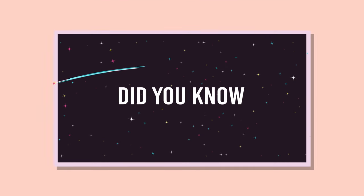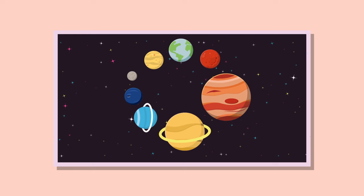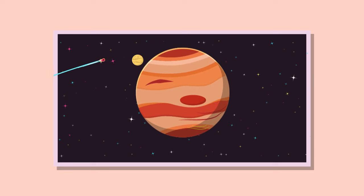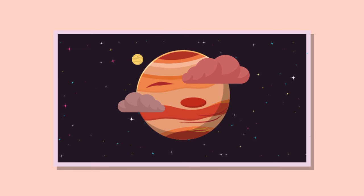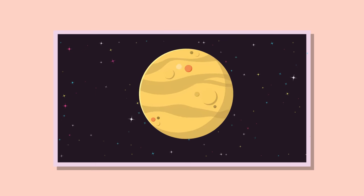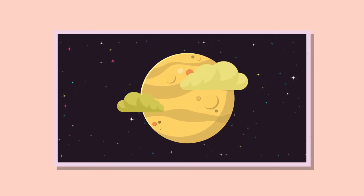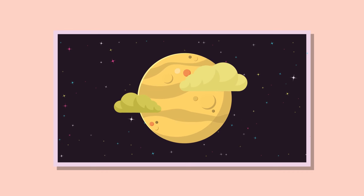Did you know? Seven out of the eight planets in our solar system have atmospheres that can hold clouds. Only Mercury does not have any. Jupiter has three layers of clouds made up of ammonia, sulphur and a mixture of ice and water. Venus, which has a pretty hellish atmosphere in general, has clouds made of highly corrosive sulphuric acid, which would not be fun to get caught in as it melts metal.